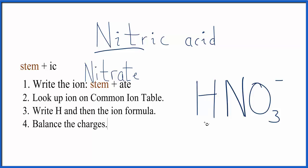And finally, we balance the charges. We see that we have a minus charge here on the nitrate. That applies to this whole polyatomic ion. Hydrogen always has a positive charge, and that positive and negative will cancel out, and that'll leave us with HNO3 as the formula for nitric acid.